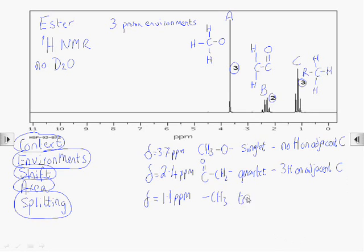And that's confirmed because environment C is a triplet which tells us there's two hydrogens on the adjacent carbon. And that signature of a triplet and a quartet linked to each other is very characteristic of an ethyl group.